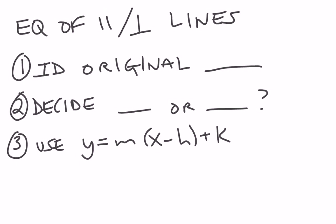First, you have to identify the original slope. Then, you have to decide whether you're doing parallel or perpendicular, and then we're going to use a formula y equals m times x minus h plus k. You may be familiar with y equals mx plus b, but this is a modified point-slope form that I can use.